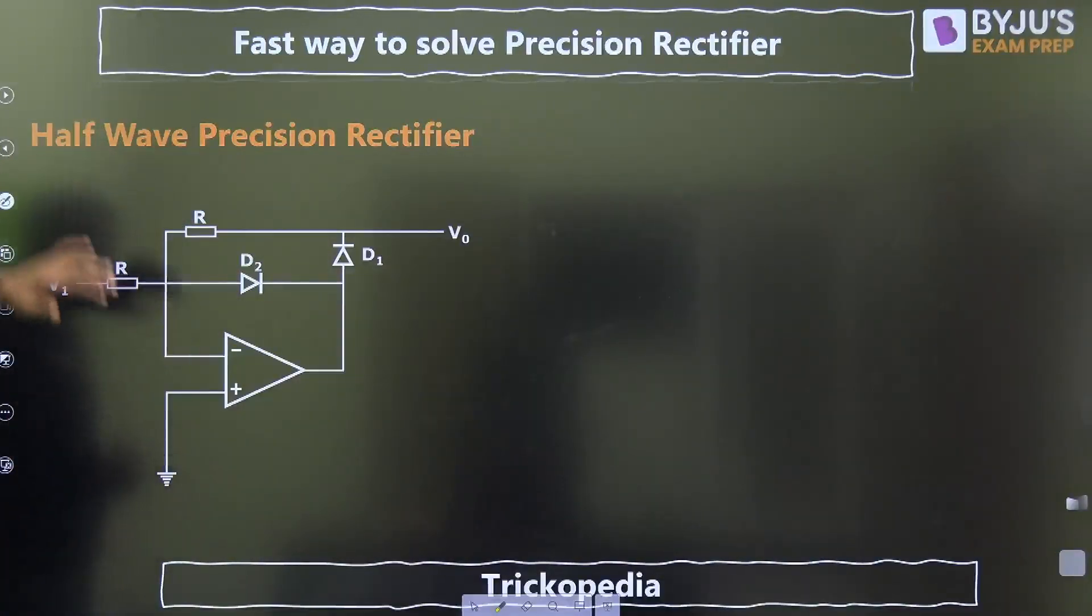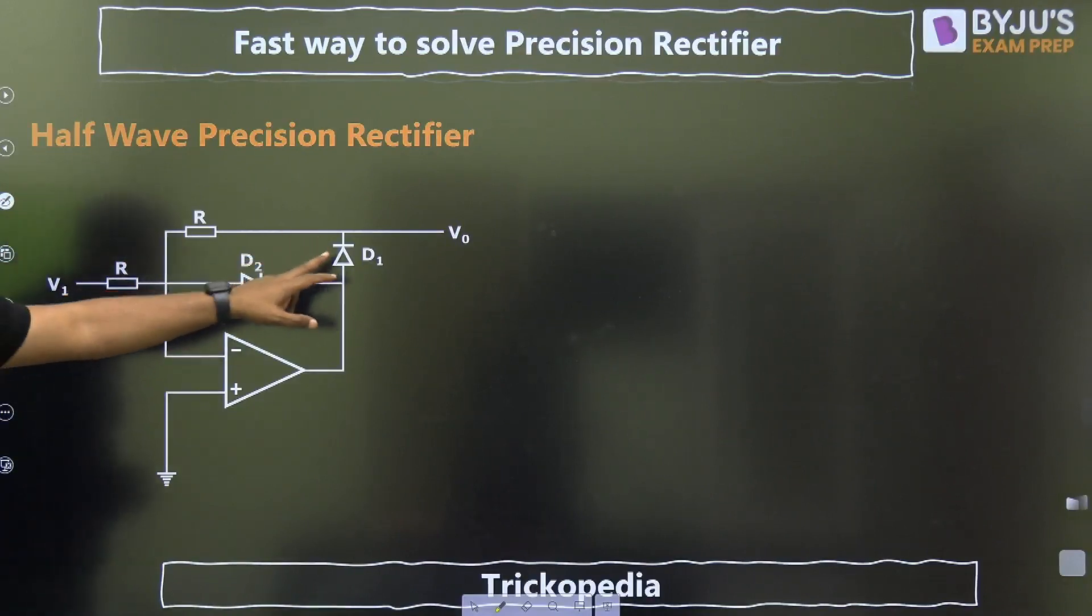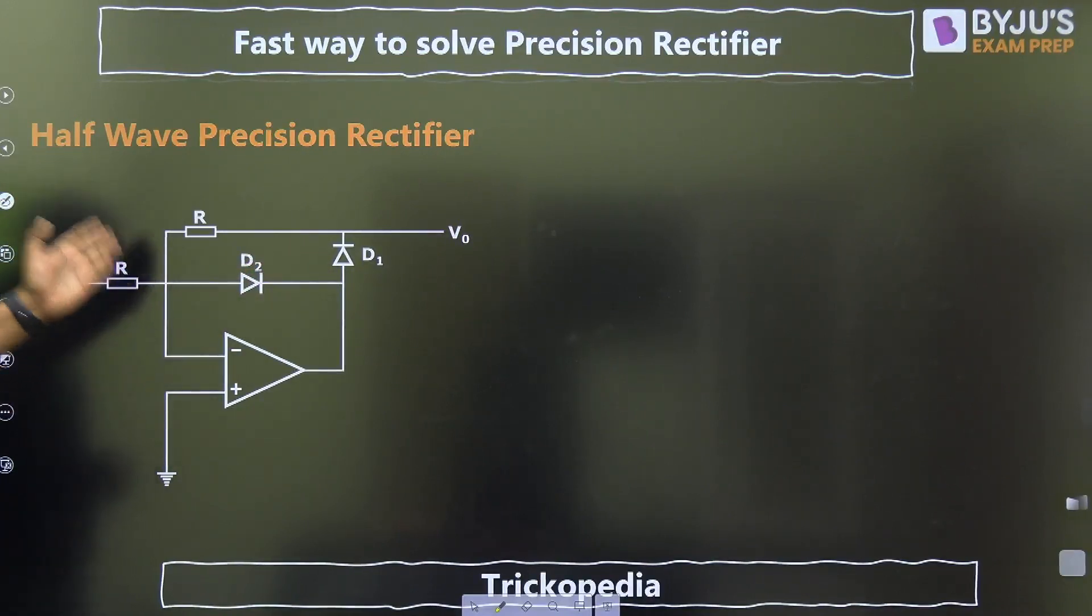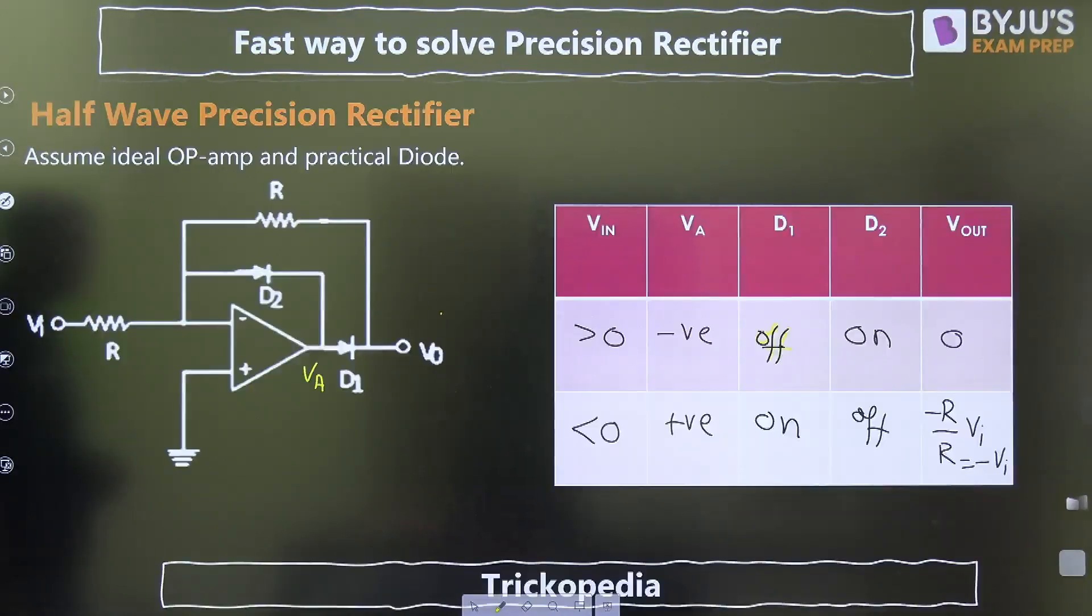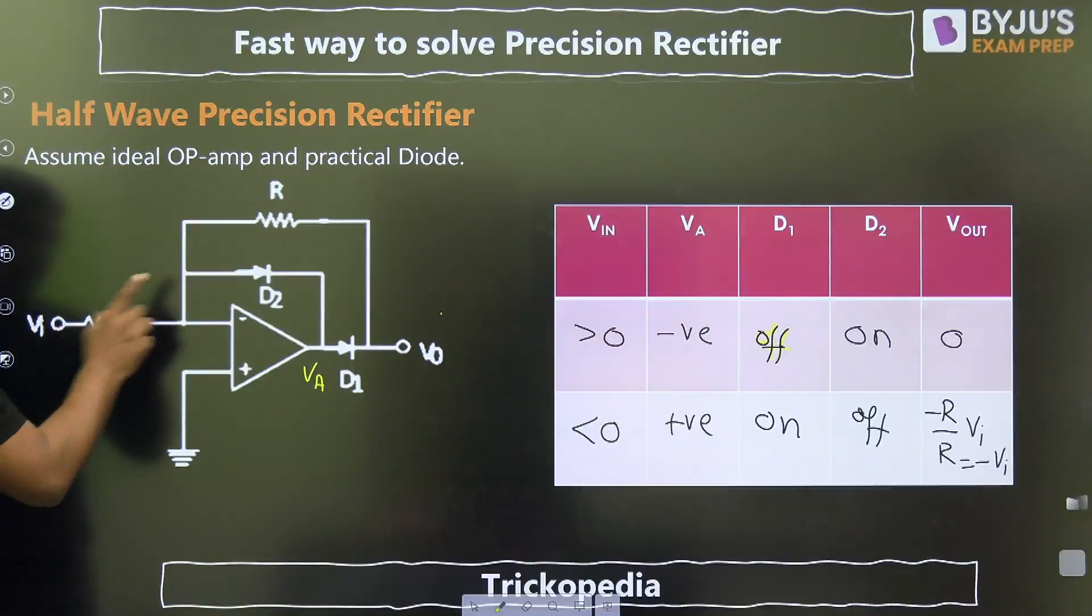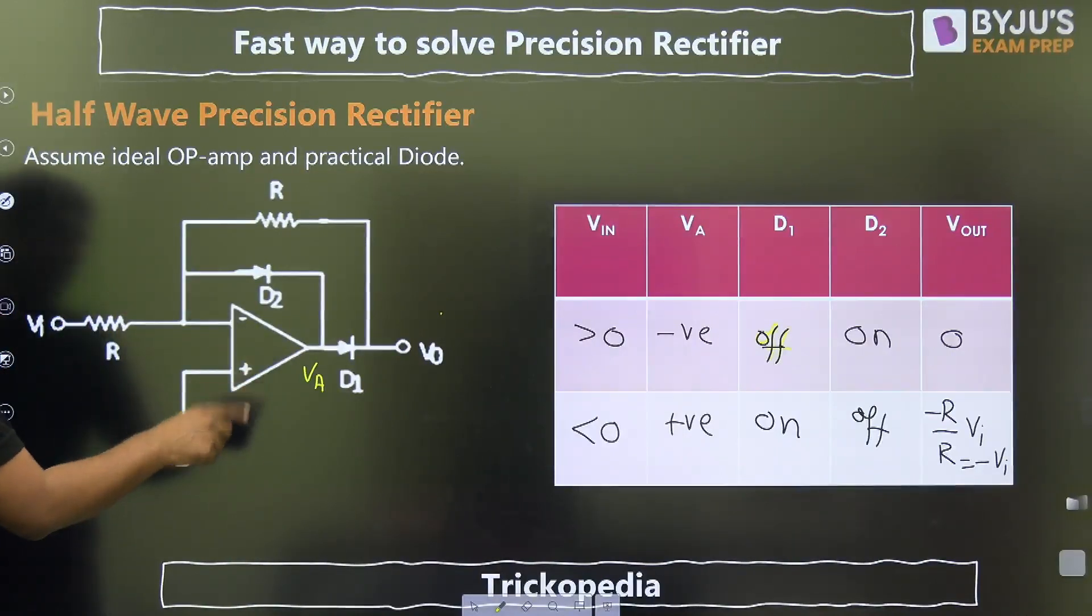Now, what is the practical solution? Half-wave precision rectifier. We are using two diodes here. Now, how we can solve this? Here, we are giving the VI in inverting terminal. There is a 180 degree phase shift. This is VA.